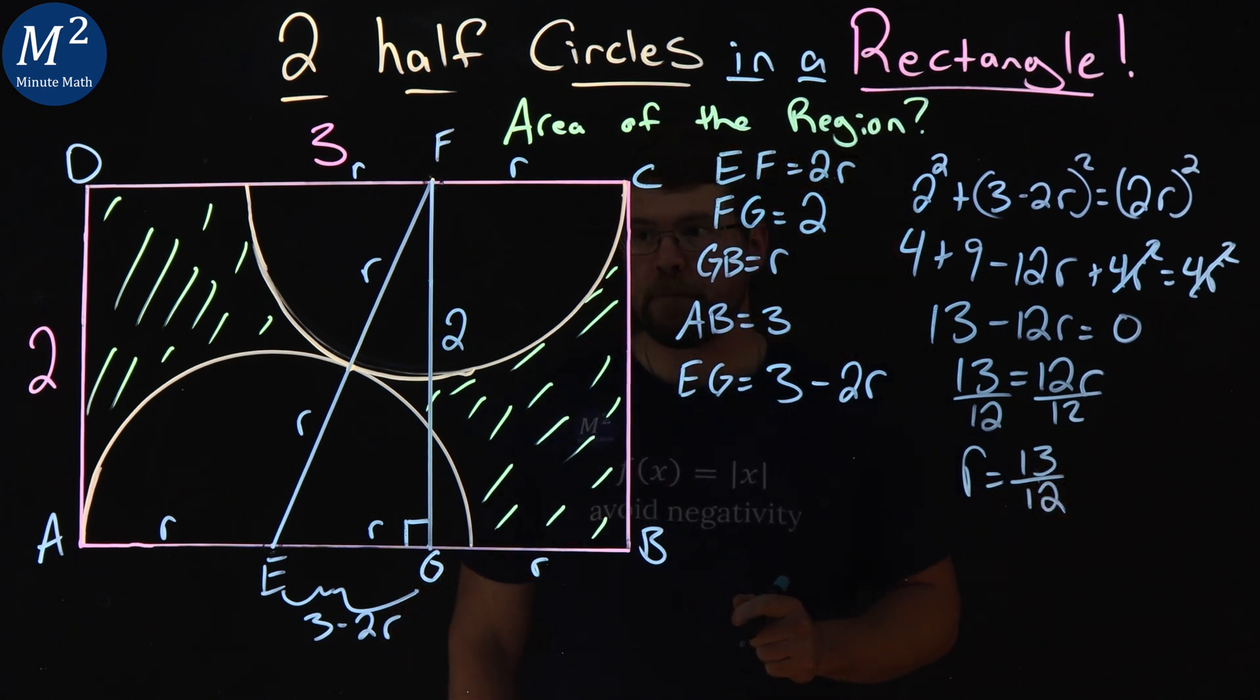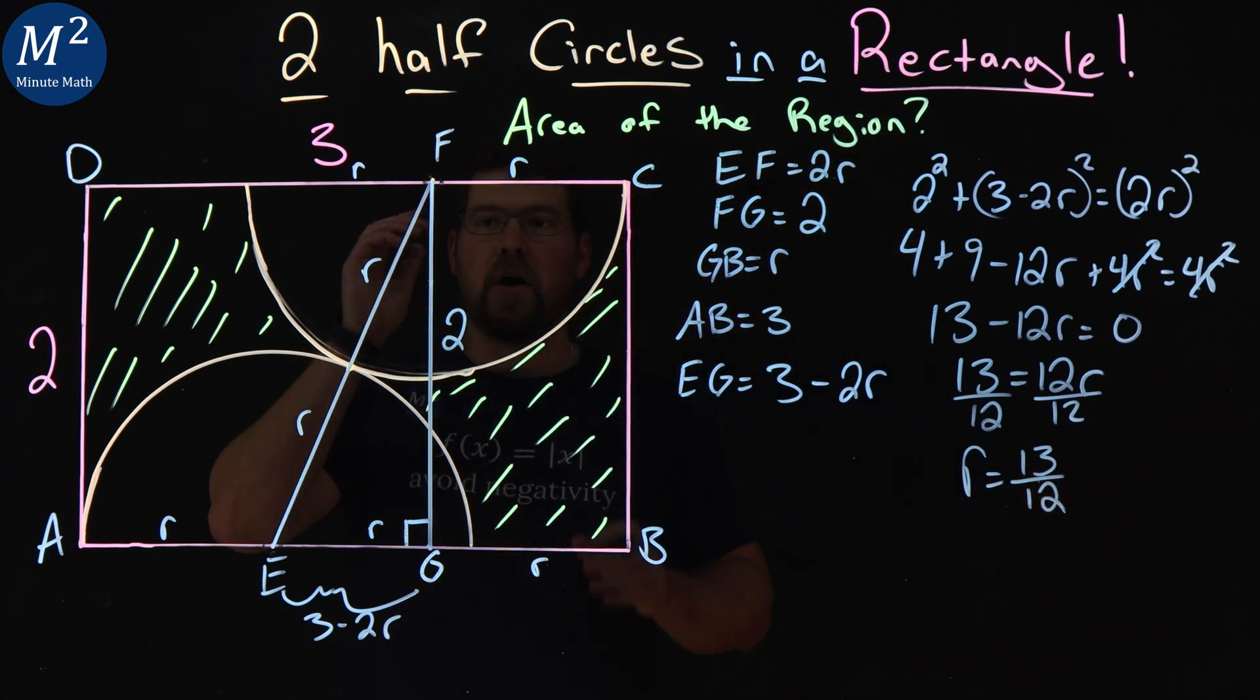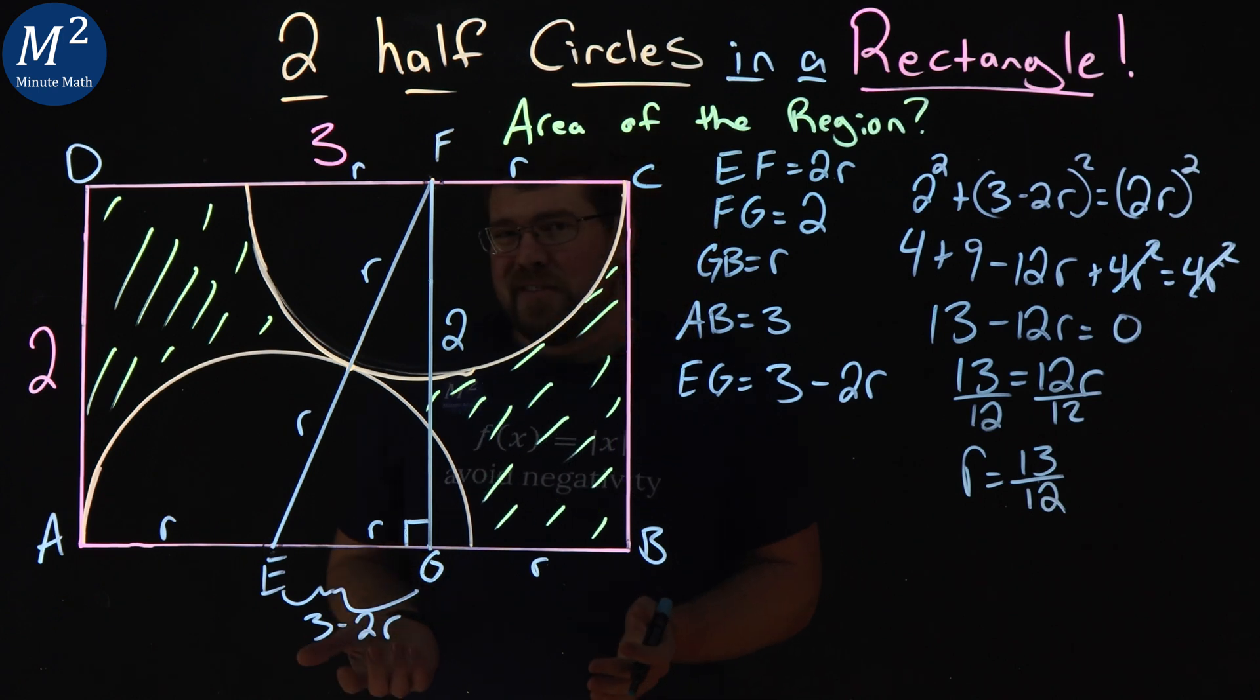Let's keep it as a fraction for now. So, now we have the radius of each circle, and now it's a pretty simple problem.